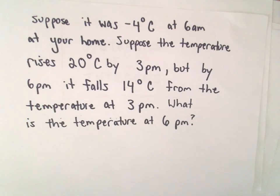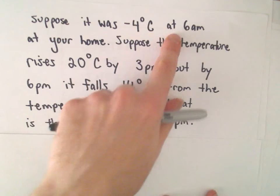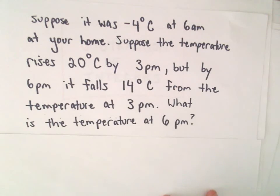Alright, so here's a little word problem to go with our integer examples. Suppose it's negative 4 degrees at 6 a.m. at your home, so nice and chilly.